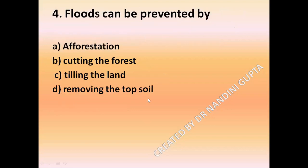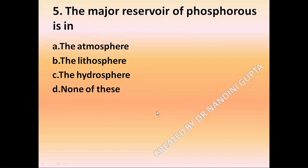For question 4, floods can be prevented by afforestation. Cutting the forest, stealing the land, removing the top soil — these activities cause floods. The correct answer is afforestation.